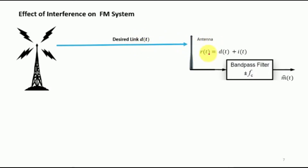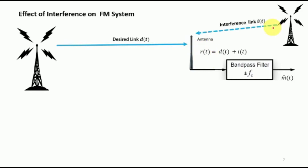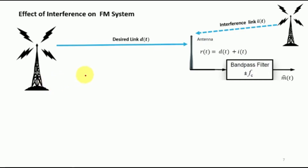The received signal at the output of the antenna is r(t). We also have an interference node or base station which is projecting an interference signal i(t) onto the antenna. The total signal received at the antenna is the desired signal d(t) plus the interference signal i(t). This kind of environment can be observed if you are driving — for example, tuned to 99 MHz while moving away from one base station and towards another, capturing both signals.